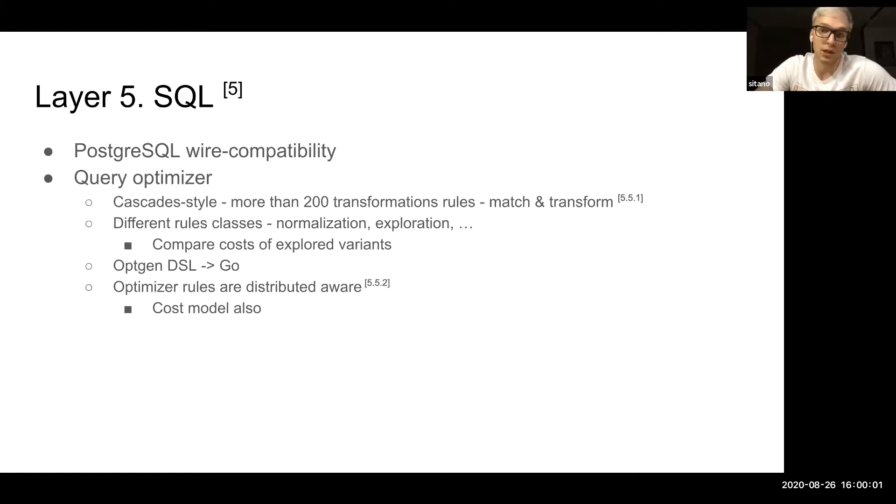Then we are moving to the SQL layer, which is built on top of the transaction layer. CockroachDB is PostgreSQL compatible and its query optimizer is based on the Cascade style. Cascade style is the transformation rules which have the form of match and transform. They usually consist of two classes: the exploration and normalization. The exploration allows the planner to compare different graphs of different plans and compare costs of them. Then they use opt-gen DSL to define the rules, which then get compiled to the Go language. They also have rules that are distribution-aware, data distribution-aware, which participate in the cost model.